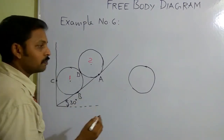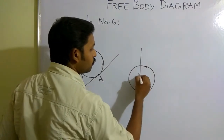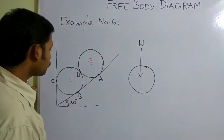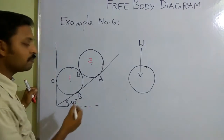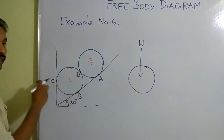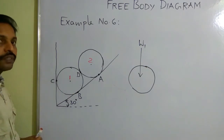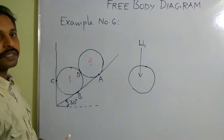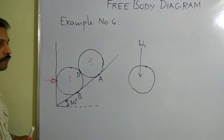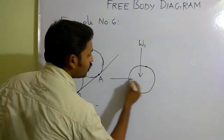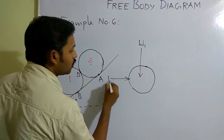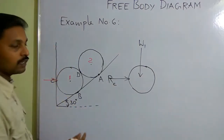First, I need to represent the weight, which always acts vertically downwards. Then observe where the restriction is — this roller is not able to move toward the wall, so you need to represent a reaction in the opposite direction at contact point C.